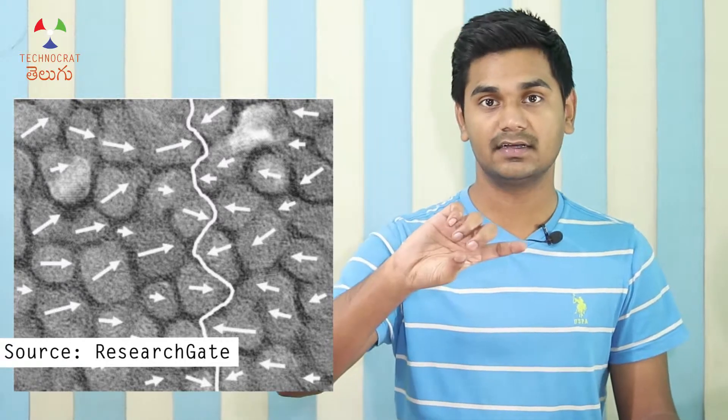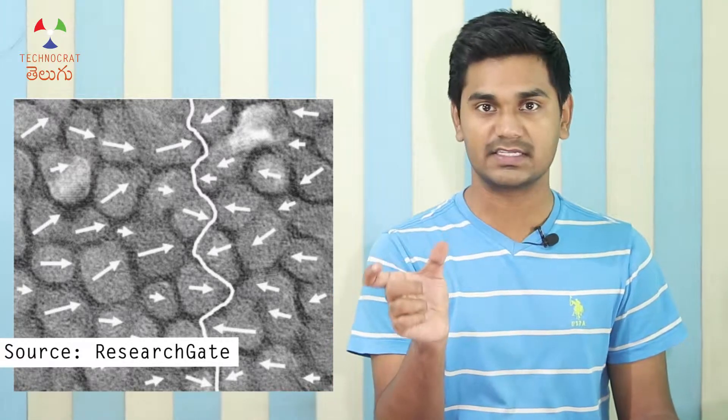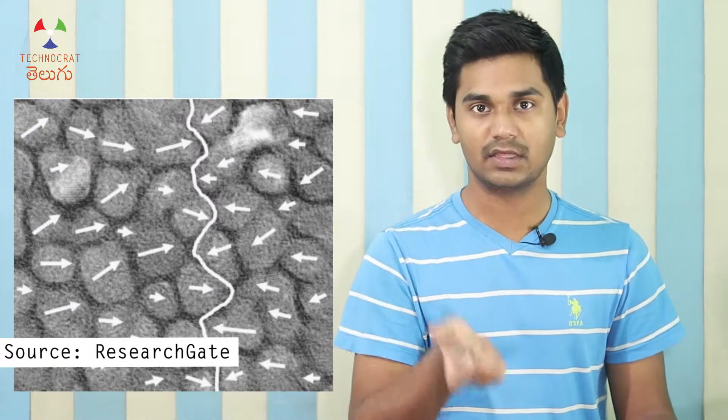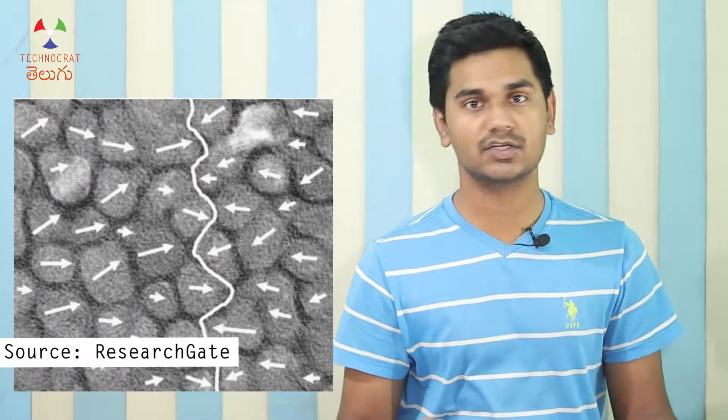If the orientation is left, that is 0; right is 1. Similarly, up is 0 and down is 1. The binary data can be saved by the magnetic orientation of these grains.